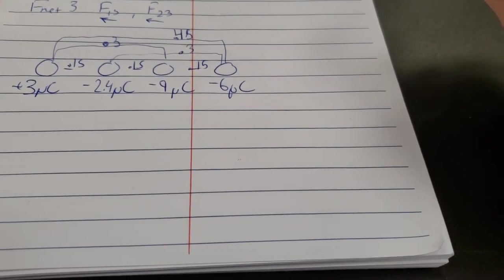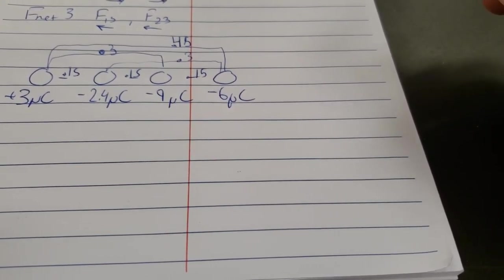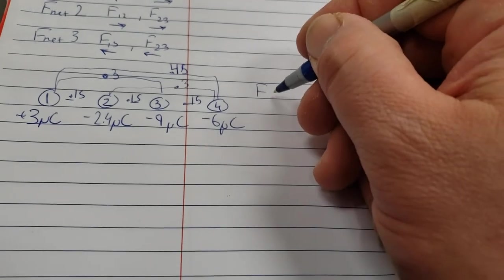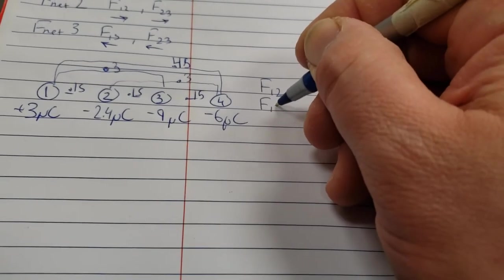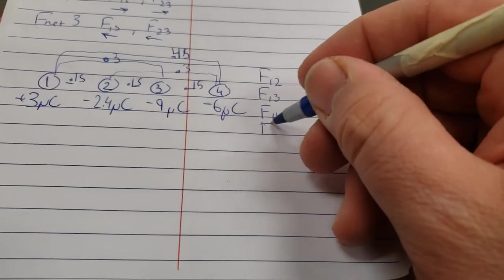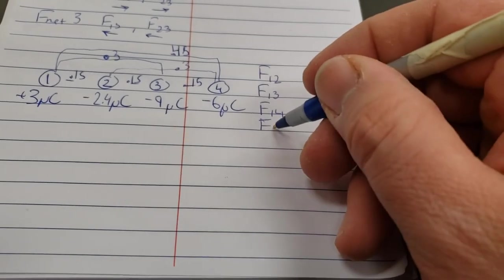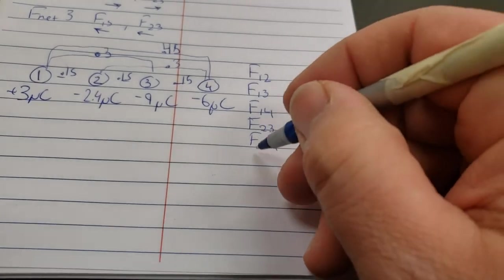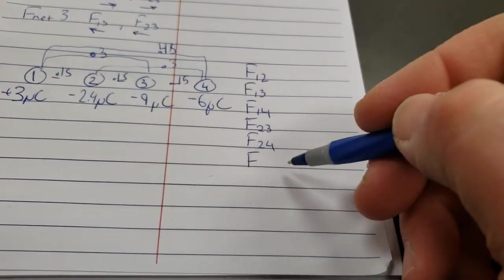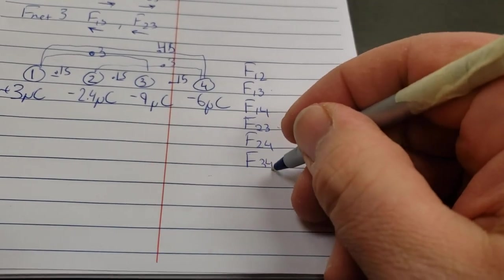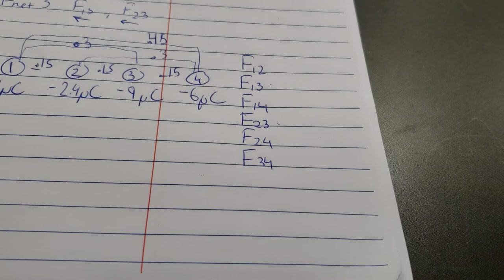So now you're thinking to yourself, how do I do this problem? You have to identify all the different forces. If we label this number 1, number 2, number 3, and number 4, we've got force 1, 2, force 1, 3, and force 1, 4. We also have force 2, 1, so we already have that. Force 2, 3 and force 2, 4. And then force 3, 1, we already have it. 3, 2, we already have it. 3, 4. So we just made 6 forces out of these 4 charges.